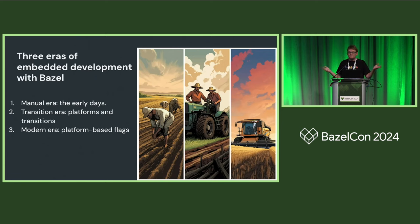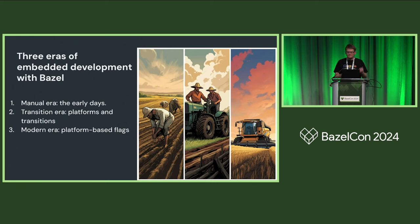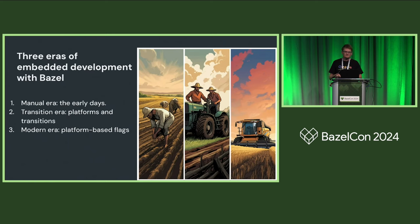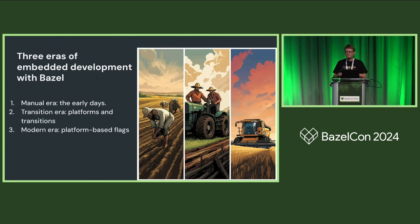What I'd like to tell you about are the three eras of embedded development with Bazel. These three eras started with the manual era, which was full of duplicative toil, then went through the transitional era where more powerful APIs such as platforms, toolchains, and transitions became available, all the way to the modern era, in which we came up with streamlined ways of doing embedded builds.